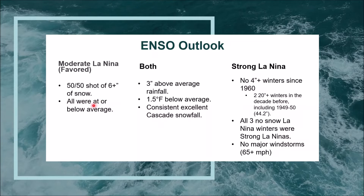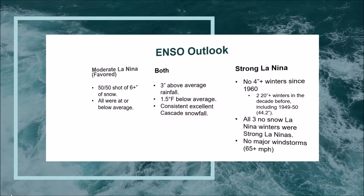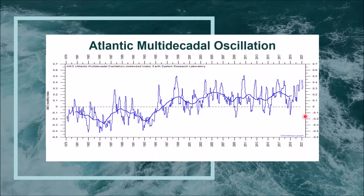If we get into a strong La Niña — which I'm not predicting — snow tends to decrease, though we can have more extreme winters. There were no major windstorms and even for moderate La Niñas the windstorm odds are diminished. However, our drought situation should improve, with on average three inches above normal rainfall and consistent excellent Cascades snowfall through these winters.